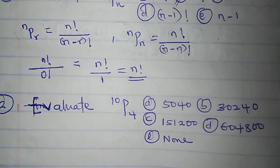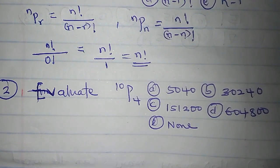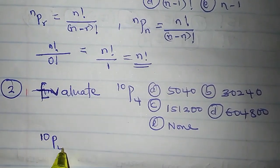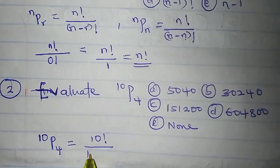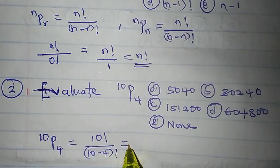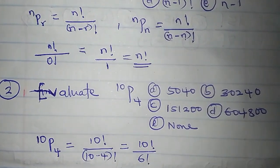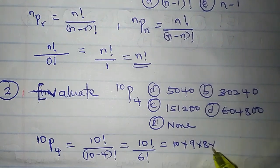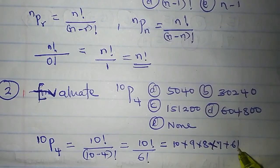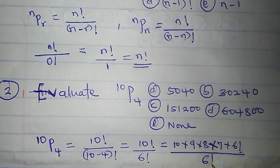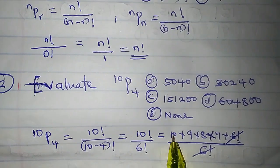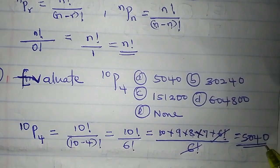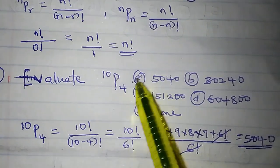The second question: evaluate 10P4. Using the same formula, 10P4 is equal to 10 factorial over (10 minus 4) factorial, which is 10 factorial over 6 factorial. Simplifying: 10 × 9 × 8 × 7 × 6 factorial divided by 6 factorial. The 6 factorials cancel, leaving 10 × 9 × 8 × 7, which equals 5,040. So 10P4 is 5,040, found in option A.